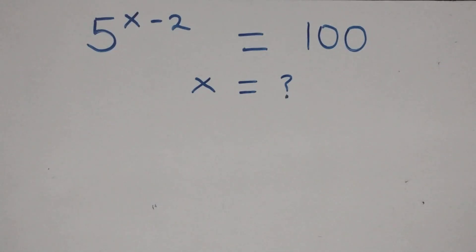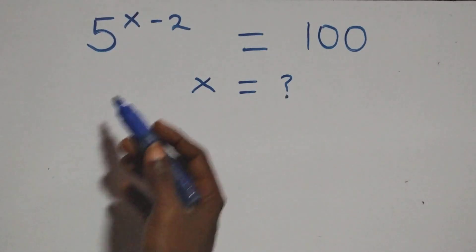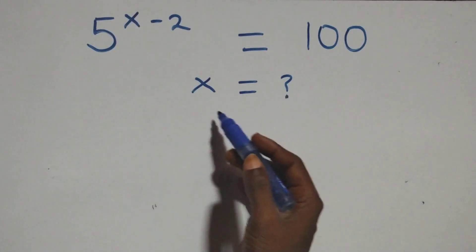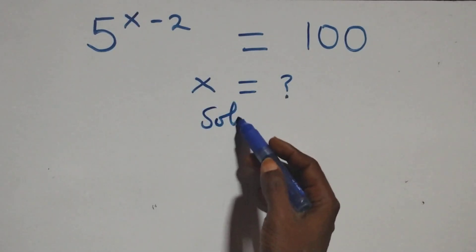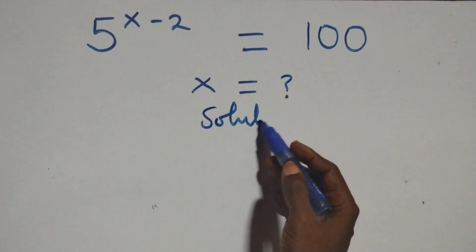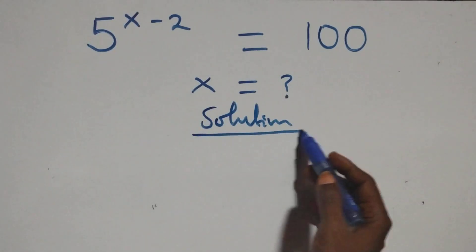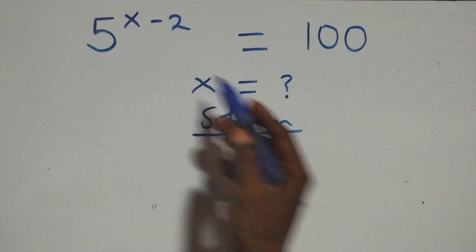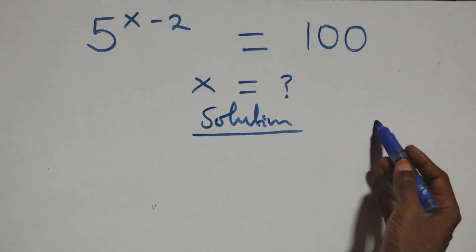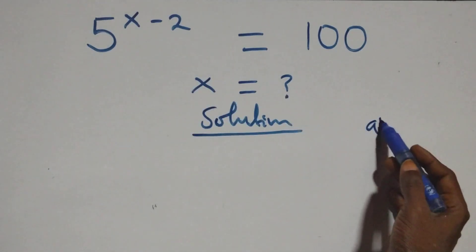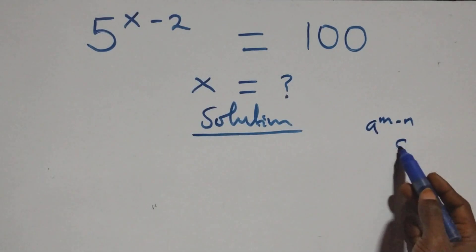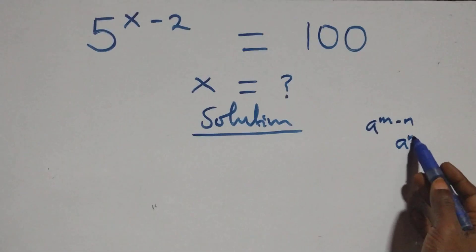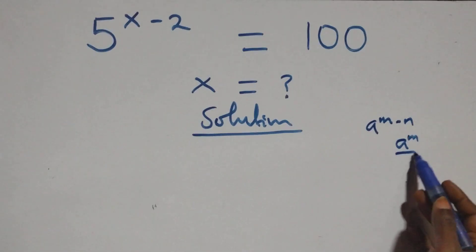Hello, you are welcome. We will solve a nice exponential equation. This follows when we have a raised to the power n minus n, which is the same thing as a raised to power n over a raised to power n.